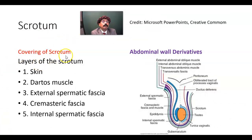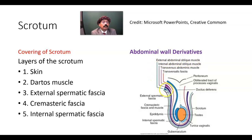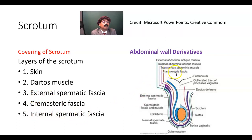What are the coverings of the scrotum? That means, what are the layers of the scrotum? We have skin, then dartos muscle — which is replacing the superficial fascia — underneath the skin. Then external spermatic fascia, contributed by the external oblique muscle. Cremasteric fascia is contributed by the internal oblique muscle. The transversus abdominis has no or minimum contribution. Internal spermatic fascia is derived from the transversalis fascia.